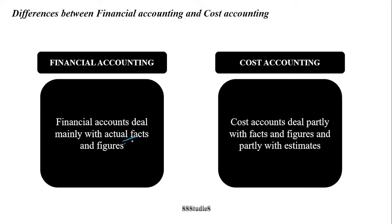Financial accounts deal mainly with actual facts and figures, whereas cost accounts deal partly with facts and figures and partly with estimations. Financial accounts are post-mortem — transactions have already occurred and based on these the business finds out whether profits or losses were made. Whereas cost accounting deals with facts and figures but also goes one step ahead, using present and past cost data or a combination of both to estimate future costs. So cost accounting deals not only with facts and figures but also with estimates.